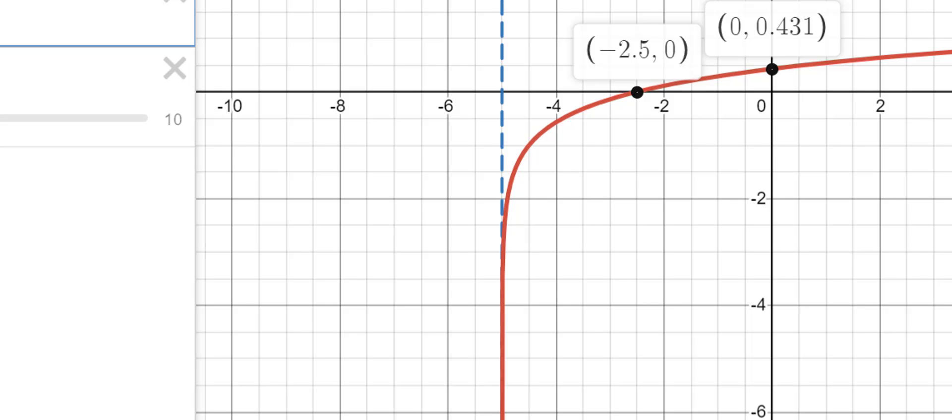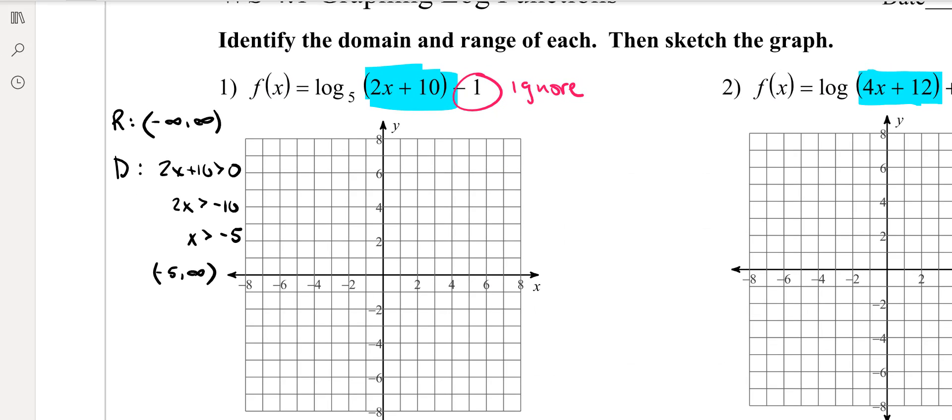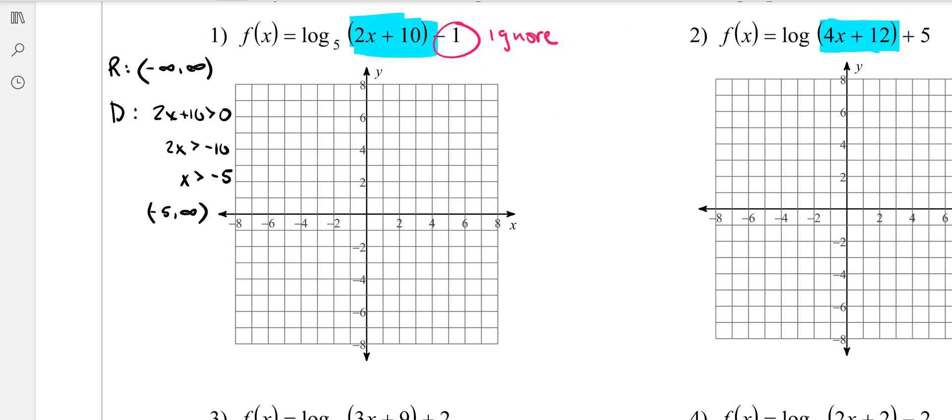One is that vertical asymptote at x equals negative 5. So on your picture, you're going to go ahead and go to negative 5 on the x-axis, and you're going to put a dashed line, because that's a vertical asymptote right there.